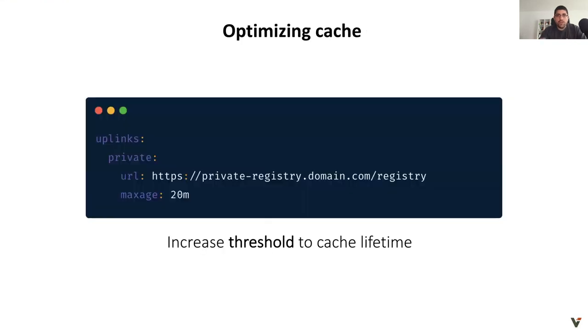Using Verdaccio you can apply an extra optimization: increasing the max-age of your cache. This will avoid recurring requests to remote registries, speeding up the build.